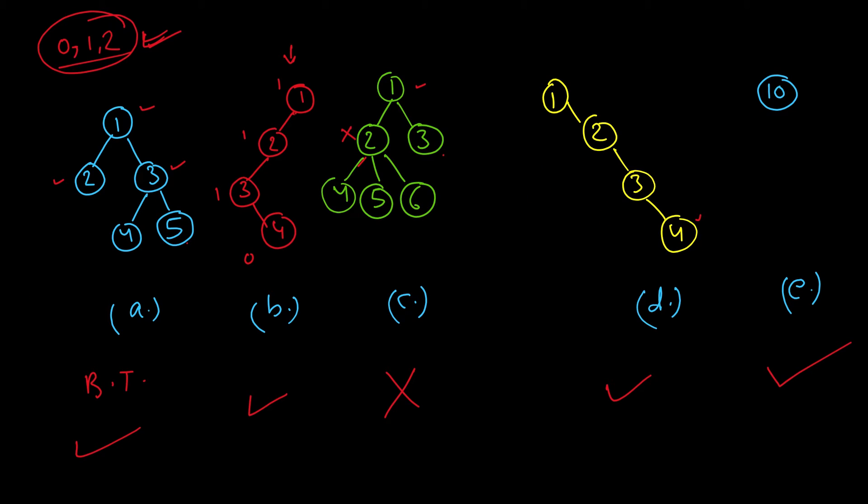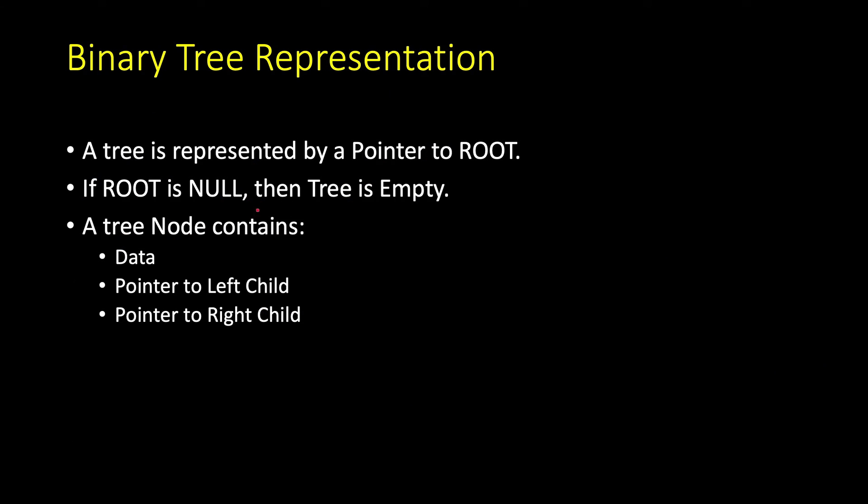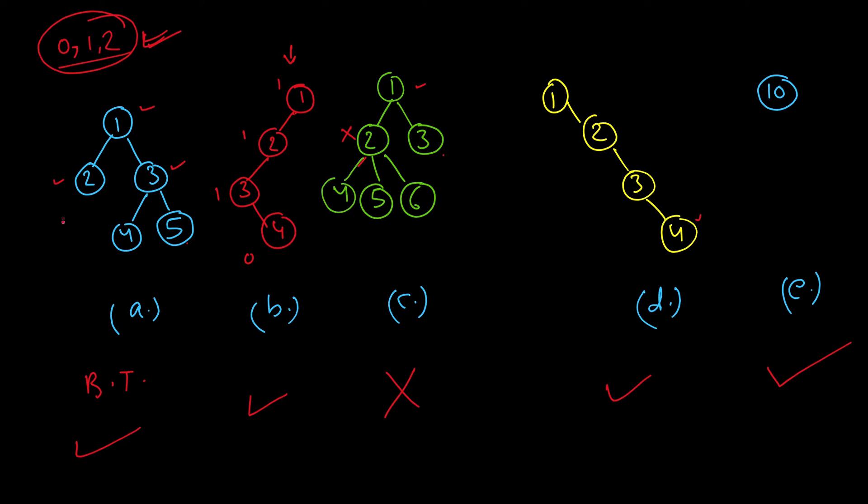Now let's see how we can represent binary trees. So a tree is represented by a pointer to root node. So you may feel that I have to represent it by all the nodes, but that is not required because once you have pointer to root, you know that it can have only two children, so left and right. So if you have root, if you want to access let's say four, then what will you do?